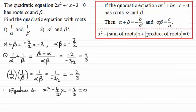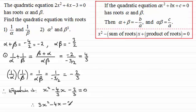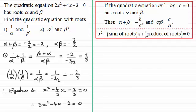You could leave it like that, or multiply throughout by 3, giving 3x squared minus 4x minus 2 equals zero.